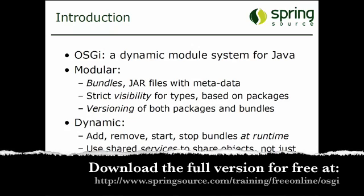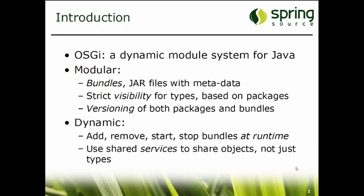OSGI gives you very strict visibility for types that are defined by bundles. You can make certain types visible to other bundles on a package level, and if you do that you can also version those packages and the bundles themselves, which allows you to have multiple versions co-existing in the same runtime environment.